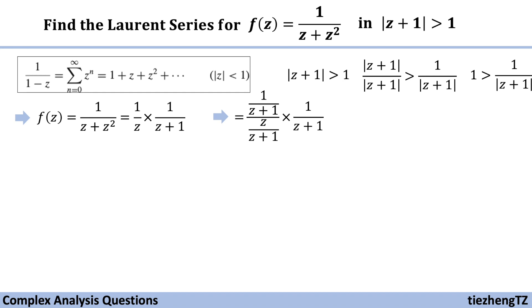First, we change 1 over z. We can just divide z plus 1 in both the numerator and denominator parts. And then let's do something with the denominator parts.